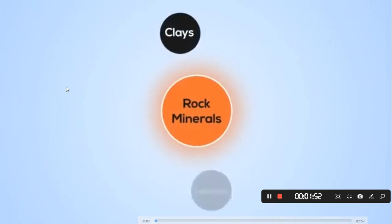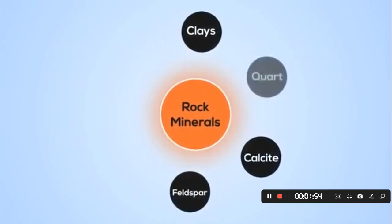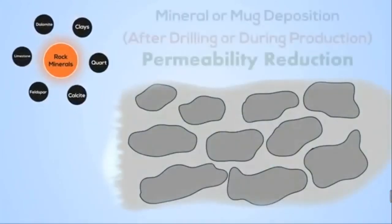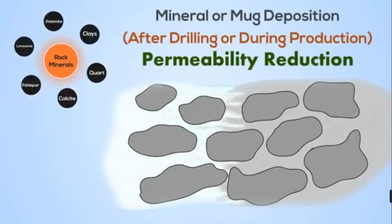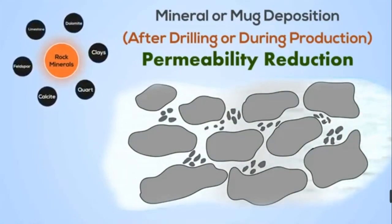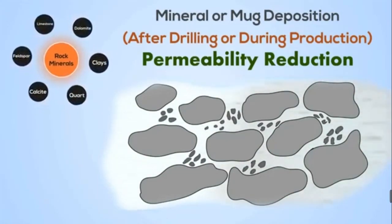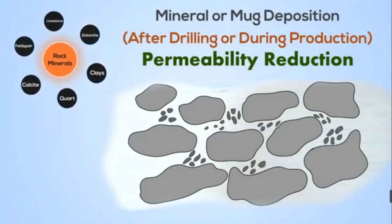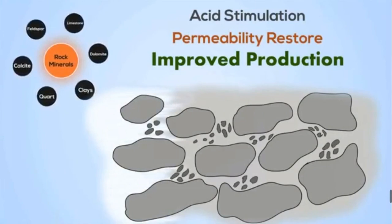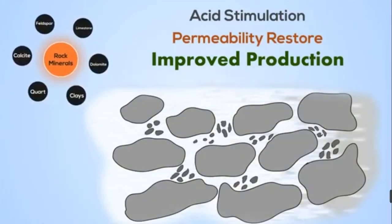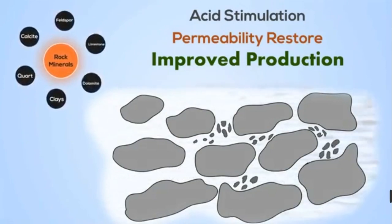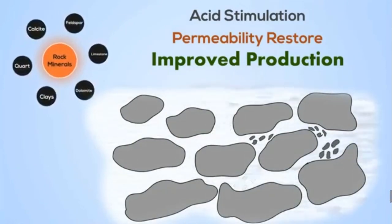Clays, feldspar, calcite, quartz, limestone, dolomite, and various other reservoir solid impurities deposit between the sediment grains of the reservoir rocks in the near-wellbore region and reduce rock natural permeability and consequently production. Matrix acidizing restores permeability by dissolving rock minerals in the near-wellbore region, thus improving productivity in both sandstone and carbonate wells.